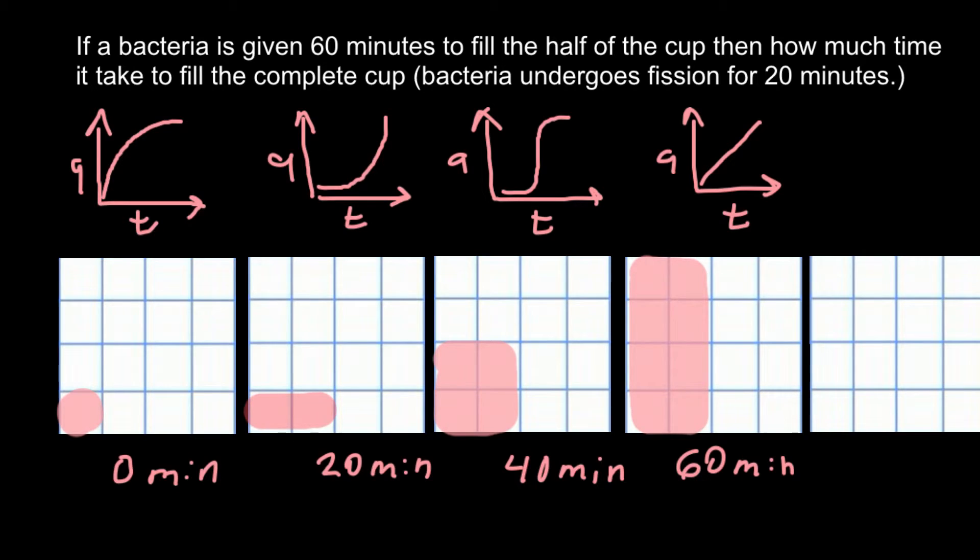As you see, we have a square four by four, and at time zero bacteria occupied one-sixteenth of the plate, or in other words 6.25 percent of the surface. At 20 minutes, bacteria occupied two out of sixteen, so one-eighth, which gives us 12.5 percent of the surface of the petri dish.